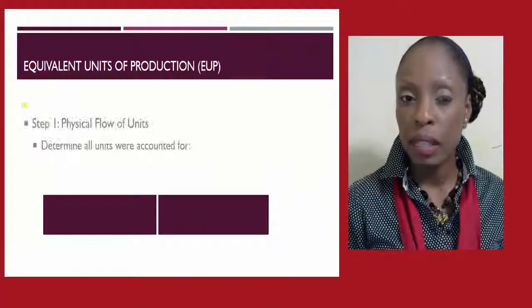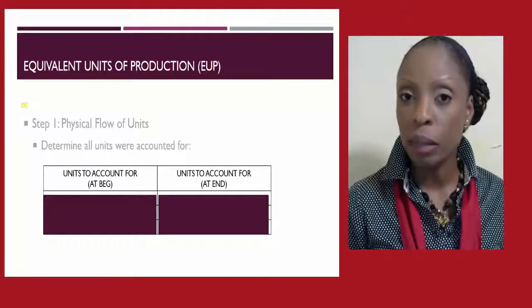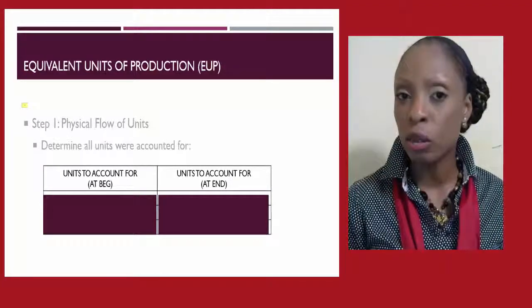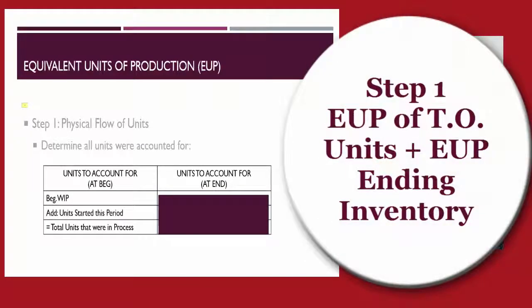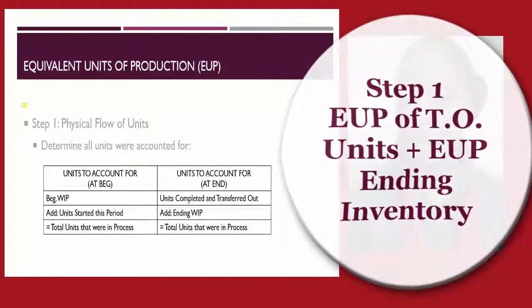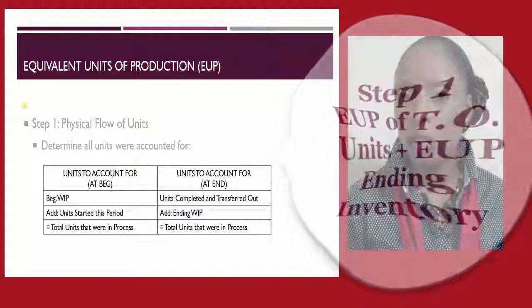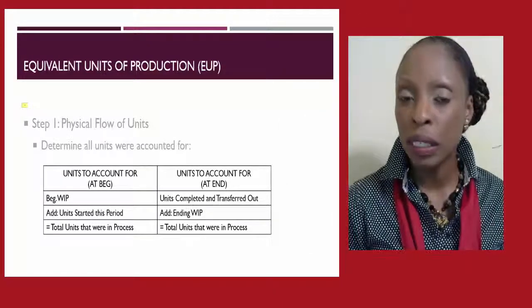Step 1 is to reconcile the appropriate amounts in beginning inventory plus what was transferred in, to ending inventory plus what was transferred out. If we take beginning work-in-process and add the units started during that period, we get the total units in process. At the end of the period, the units transferred out plus the units in ending work-in-process should equal beginning plus what was transferred in. Once these items are reconciled, we can move on to Step 2.